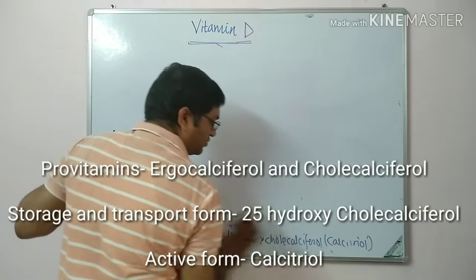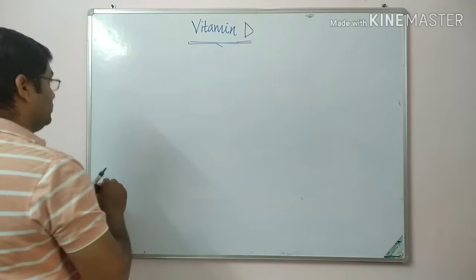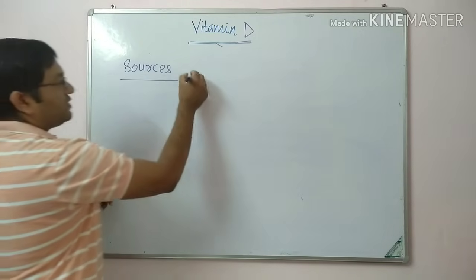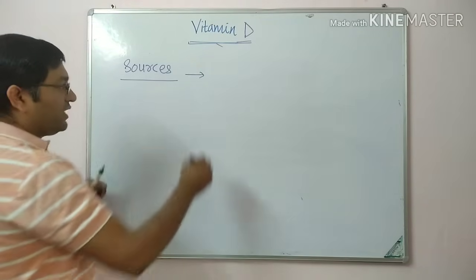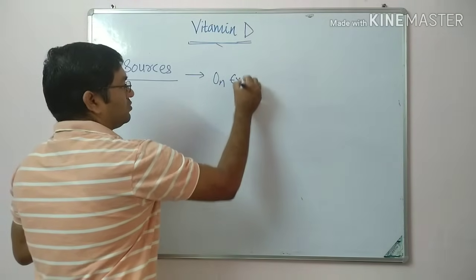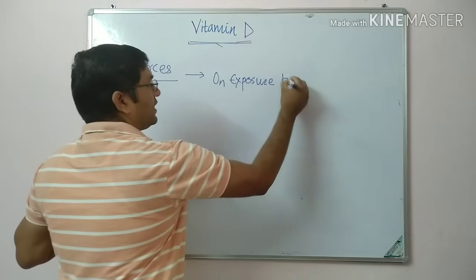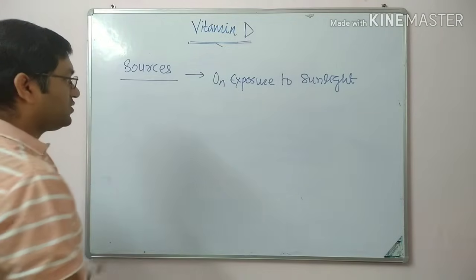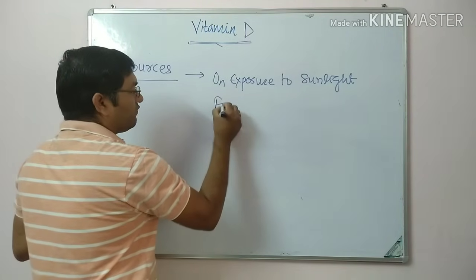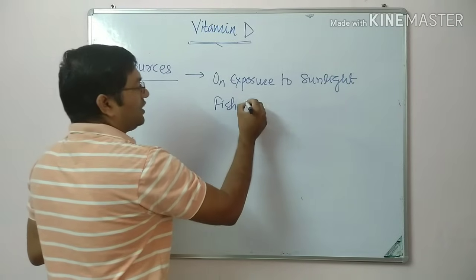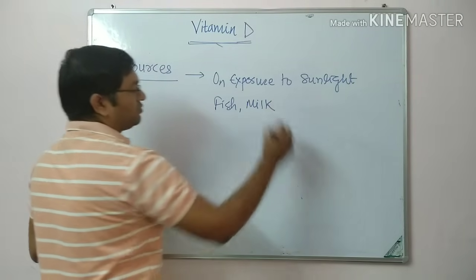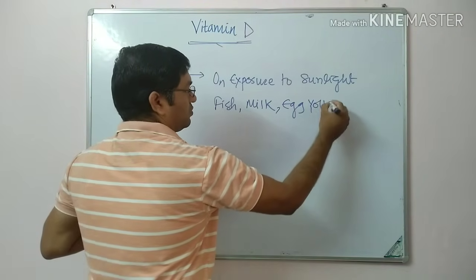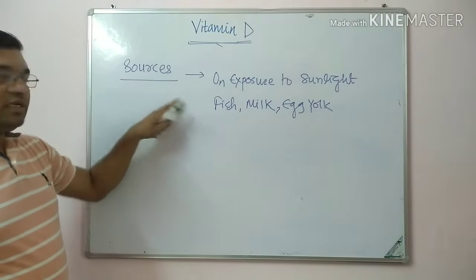Now coming to the sources. The major source of vitamin D is exposure to sunlight. Food sources include fish, milk (a moderate source), and egg yolk.